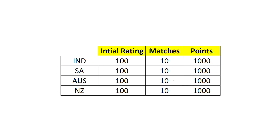What does this initial rating mean? We already understood the relationship between rating, matches, and points. So here: 10 matches, 1000 points — 1000 divided by 10 gives us a rating of 100. You can also assume it as match number one with points of 1000. Multiples of 10 are an easier number to start with. So initial rating of 100 means 10 matches and 1000 points.